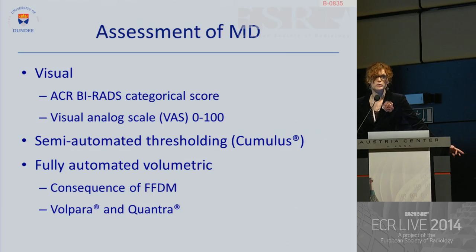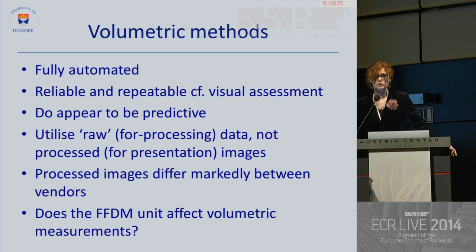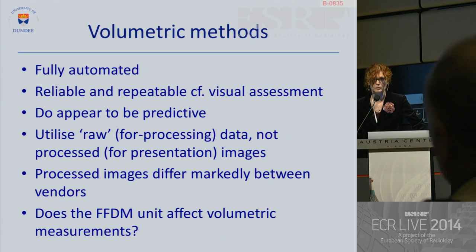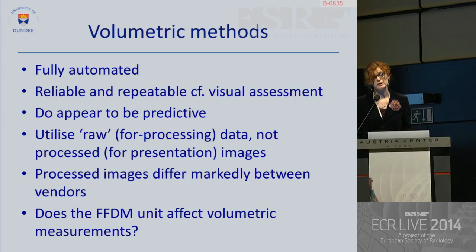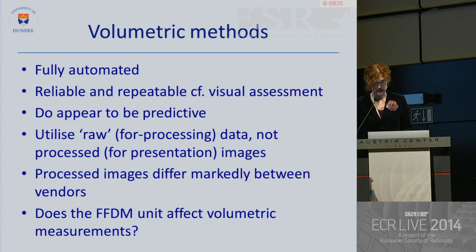The trouble with Cumulus is it's very time-consuming and cumbersome, and there's no way that it could be used in the clinical arena. But with the widespread uptake of full-field digital mammography, now fully automated volumetric assessment is a realistic possibility. These methods are not only fully automated, they are reliable and repeatable in comparison with visual assessment, and they do appear to be predictive of breast cancer risk. They utilize the raw data as opposed to the processed images, and we are all familiar with the very different appearances of a Hologic mammogram and a GE mammogram.